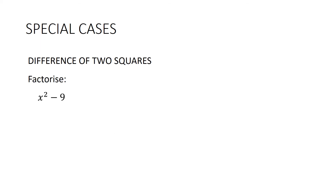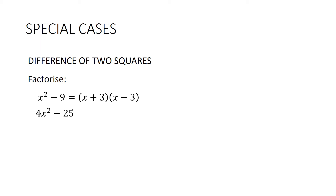With the difference of two squares, for x² − 9: you can say you want factors of 9 with a difference of 0 since there's no middle term, or just recognise it as the difference of two squares — (x + 3)(x − 3). Check: x² − 3x + 3x cancels out, minus 9. For 4x² − 25: take the square root of 4x² to get 2x, and the square root of 25 to get 5, then change the sign — so (2x + 5)(2x − 5).